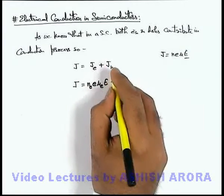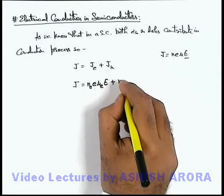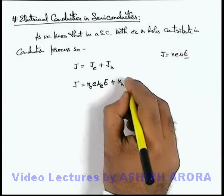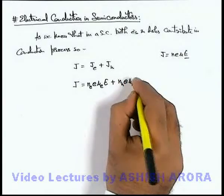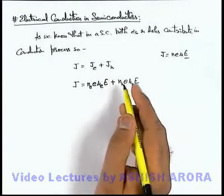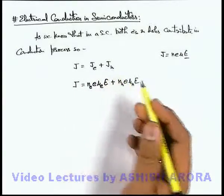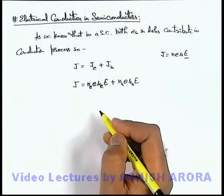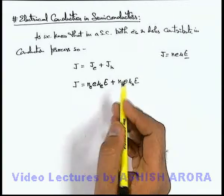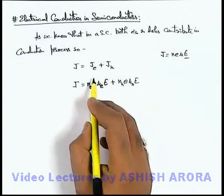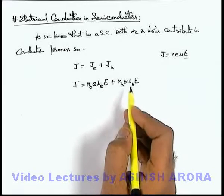Plus current density due to holes we can write as n_h·e·μ_h·E. We are taking charge equal because both electron and hole corresponds to identical numerical value of charge. The only difference is in their concentration and their mobility.